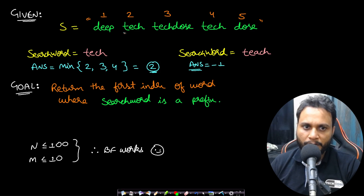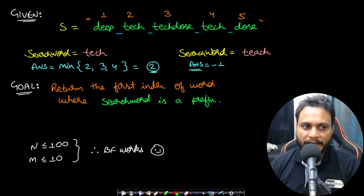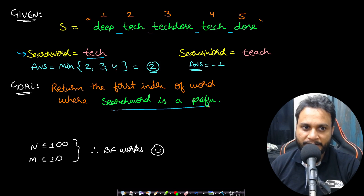Let's look at an example. In this case, let's say our string is 'deep tech techdose tech' and 'dose' — all of these words are separated by just a single space; there will always be a single space separating each word. Now, there will be a certain search word given — let's say it is 'tech.' Our goal here is to return the first index of the word where the search word is a prefix of the word in the given sentence.